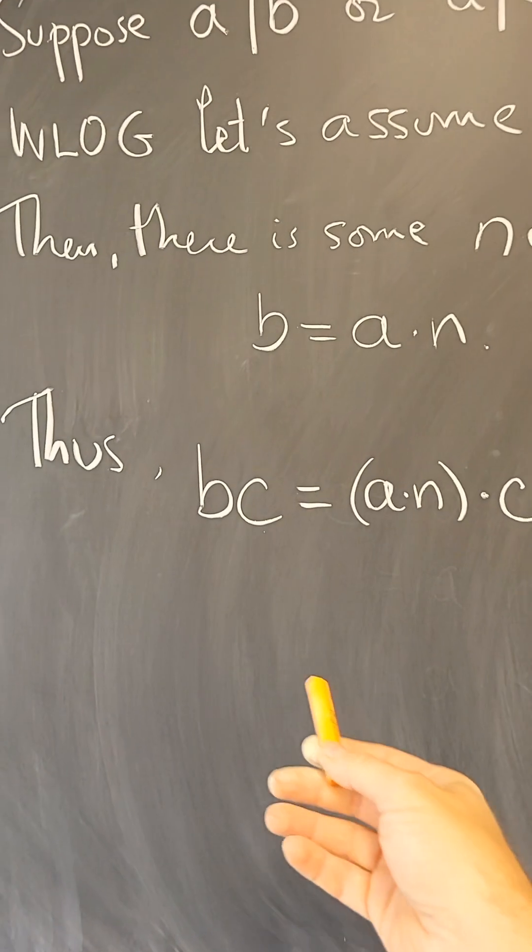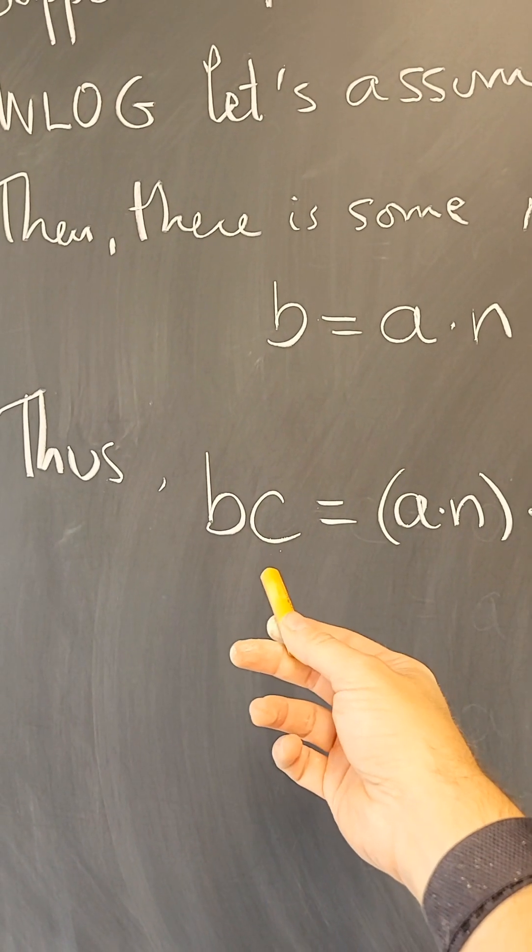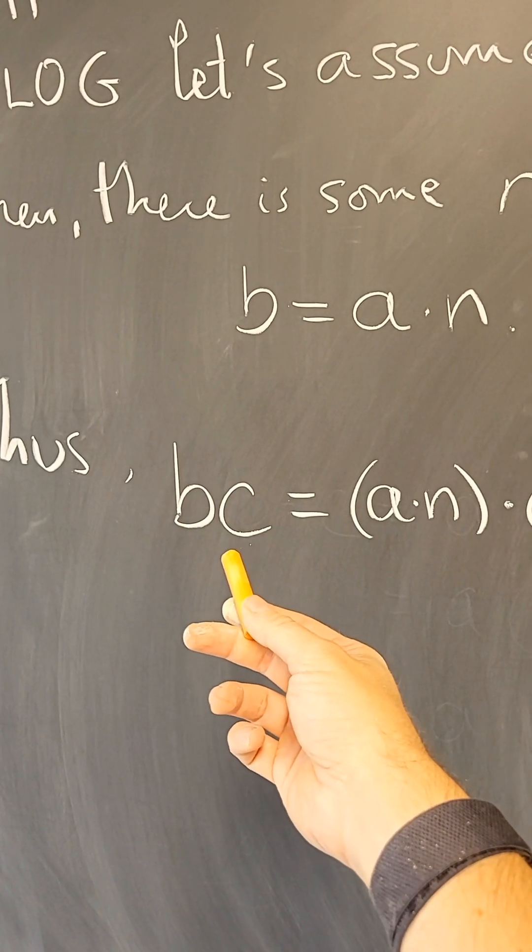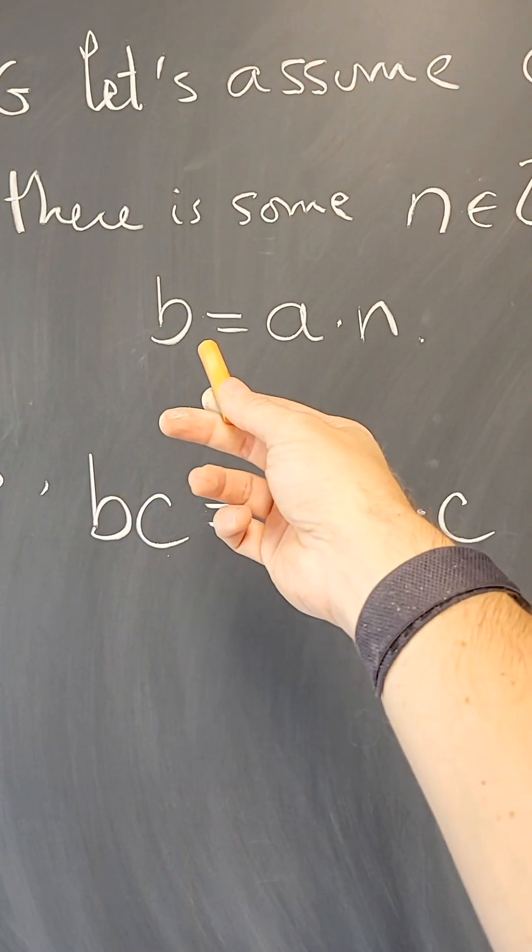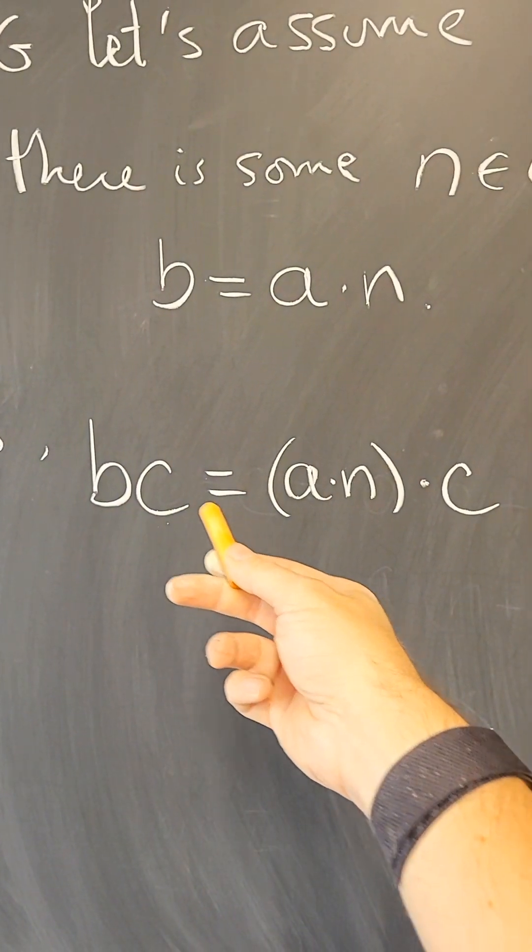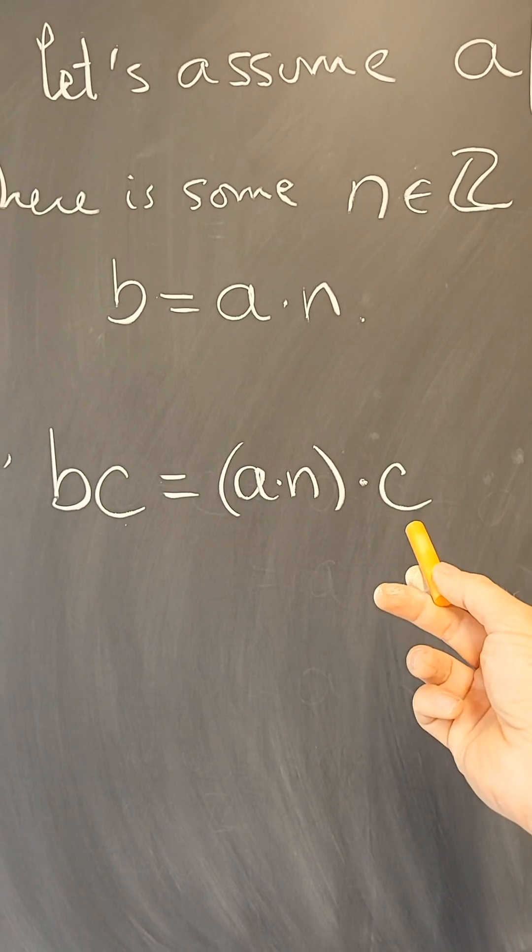Now, we want to prove that BC is divisible by A, so I have to say something about this. What I can do is plug in this formula for B into this expression, so BC equals A times N times C.